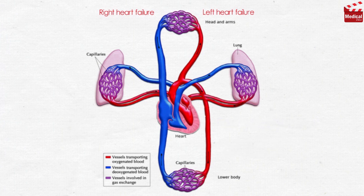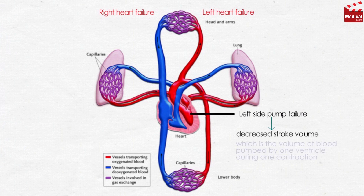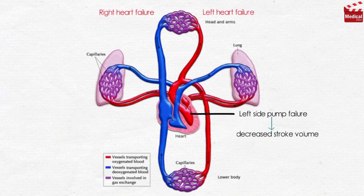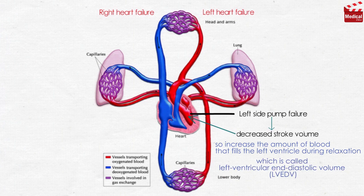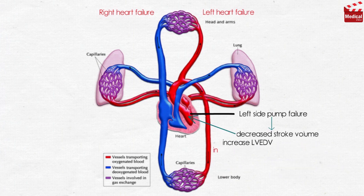Step by step, let's see what happens in this condition. First, left side pump failure occurs, leading to a decreased stroke volume, which is the volume of blood pumped by one ventricle during one contraction. This increases the amount of blood that fills the left ventricle during relaxation, called left ventricular end-diastolic volume, meaning increased preload.